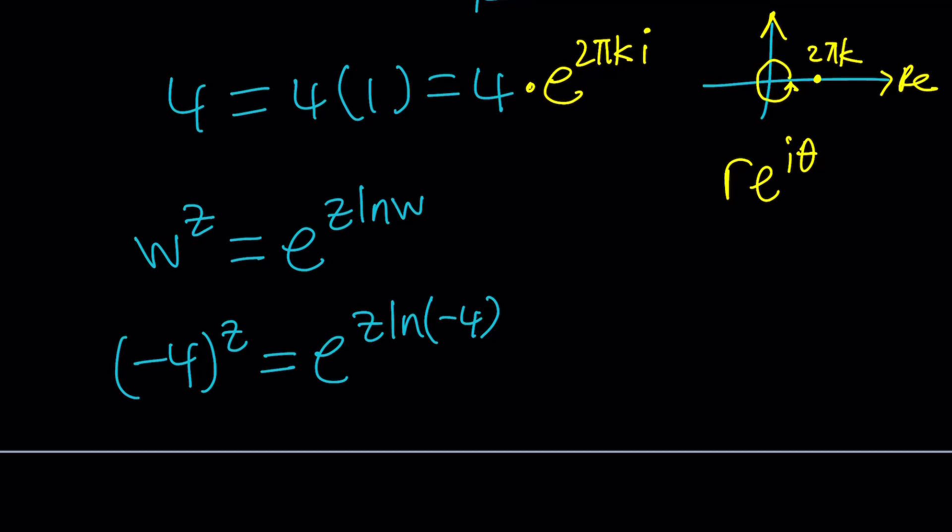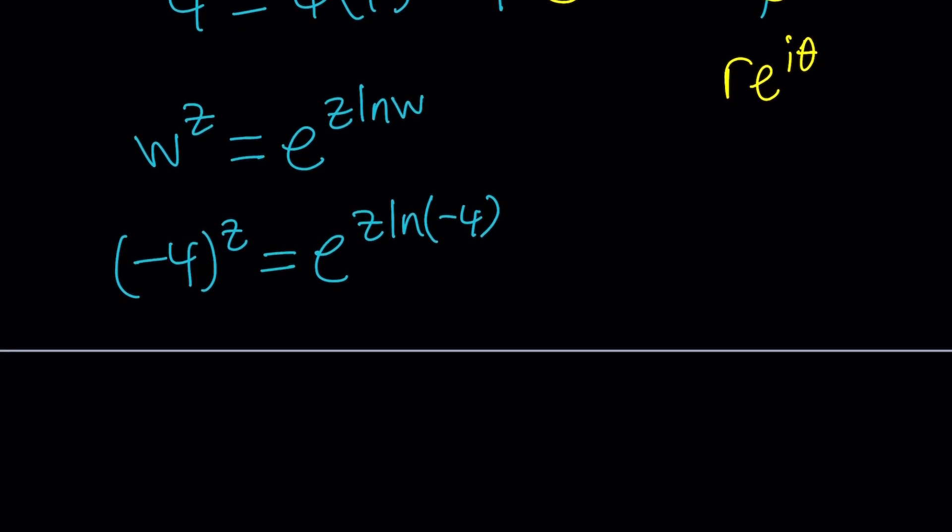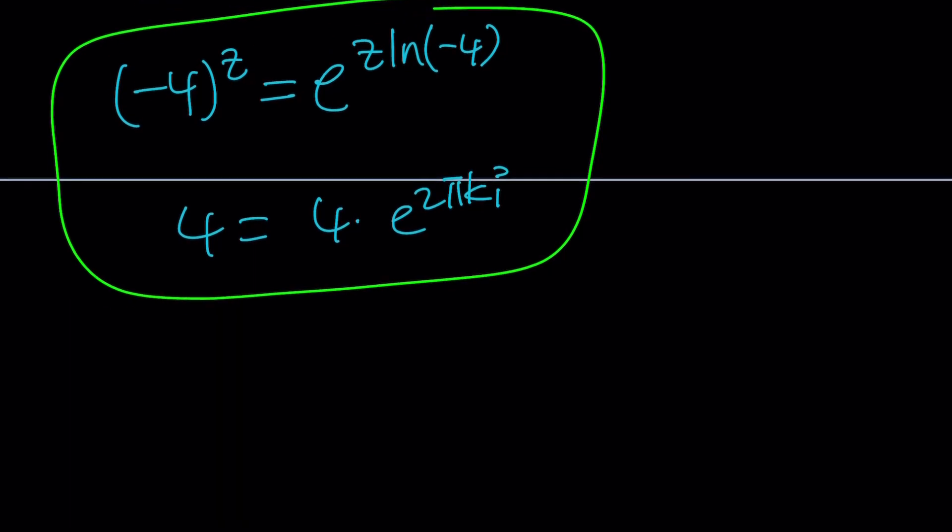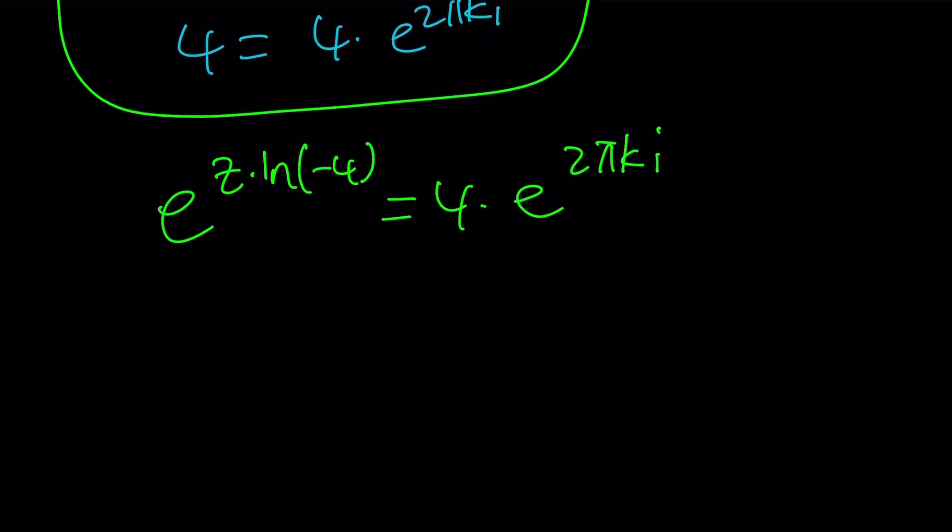So, we got negative 4 to the power z, and we also got 4 as 4 times e to the power 2 pi k i. Right? Cool. So, we got these two things. Let's go ahead and set them equal to each other. e to the power z times ln negative 4 equals 4 times e to the power 2 pi k i.